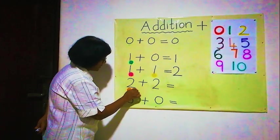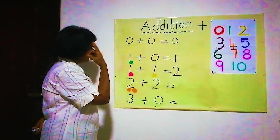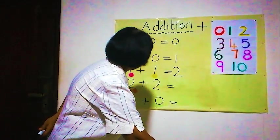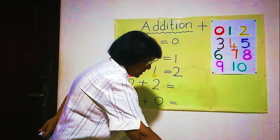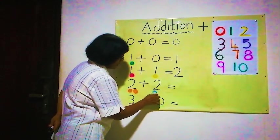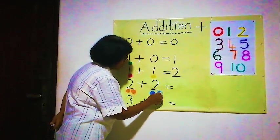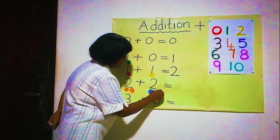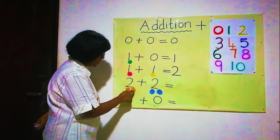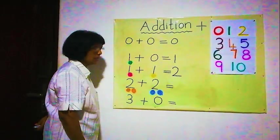For two: two balls. For one: one ball. For zero: no balls. Now here two balls. And for the second number two, we will also draw two balls. One, two — two balls here. One, two — two balls. Now we will see all together what will be the answer. We have to count together.